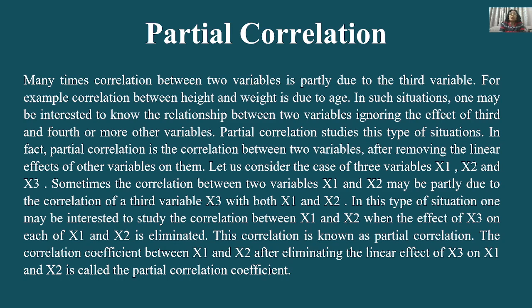So what is partial correlation? Many times, correlation between two variables is partly due to a third variable. For example, correlation between height and weight is due to age. When height increases, weight increases, but behind this, age is also partially affecting it — as age increases, height increases, and weight increases too.